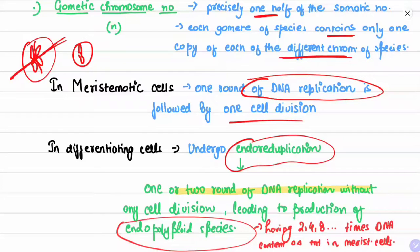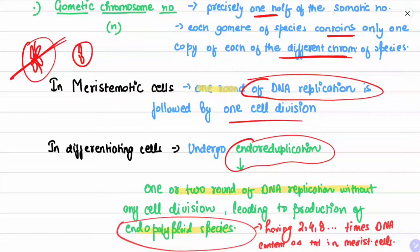This condition is called endopolyploidy, and such species are regarded as endopolyploid species. These species have two, four, or eight times the DNA content present in the meristematic cell, because in meristematic cells one round of DNA replication is followed by one cell division, whereas in differentiating cells that is not the case.